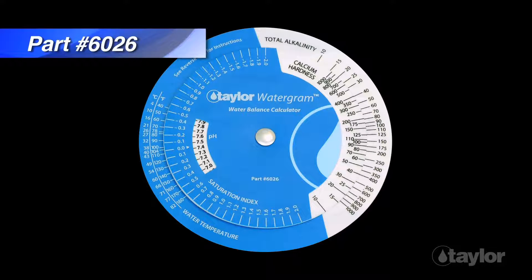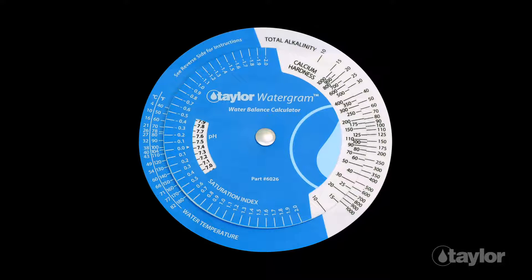Taylor's unique Watergram Wheel will do this math for you. By dialing in the test results for calcium hardness, total alkalinity, and pH, the saturation index, SI, can easily be determined.